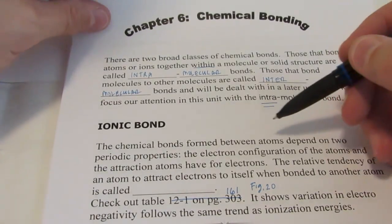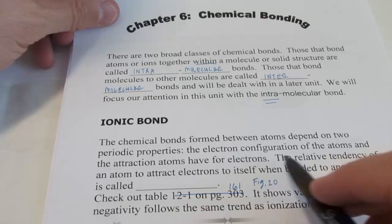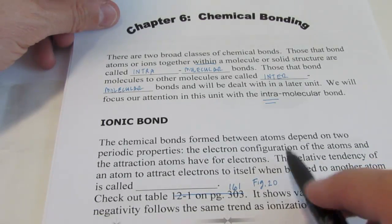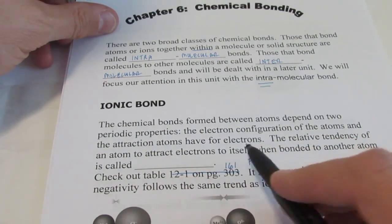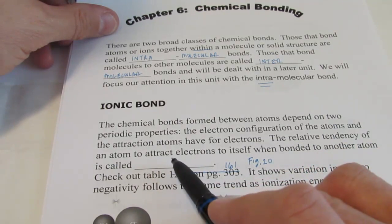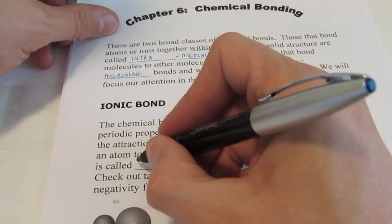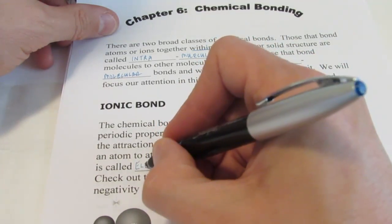The chemical bonds formed between atoms depends upon two periodic properties. Their electron configuration and the attraction that the atoms have for electrons. The relative tendency of an atom to attract electrons to itself when bonded to another atom is called electronegativity.